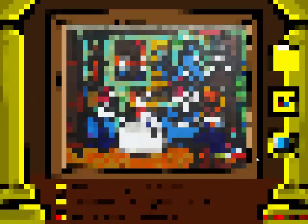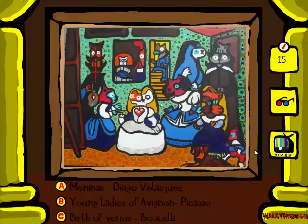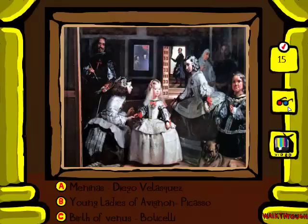Creation of Man by Michelangelo. This is a bunch of royal people standing around in a room. I think those are just paintings of other people in the background. So is this Meninas by Diego Velasquez, Young Ladies of Avignon by Picasso, or Birth of Venus by Botticelli? Based on the piebald kind of cats right here, I'm going to say Young Ladies of Avignon by Picasso. That is not a Picasso... but it is Young Ladies of Avignon. That does look like it. Maybe this is before Picasso went insane.